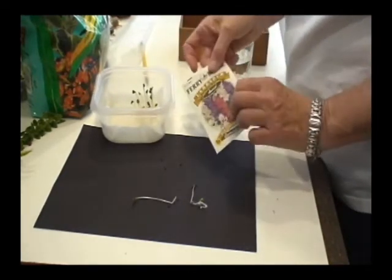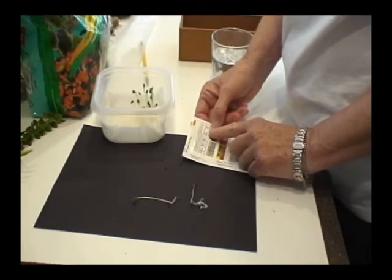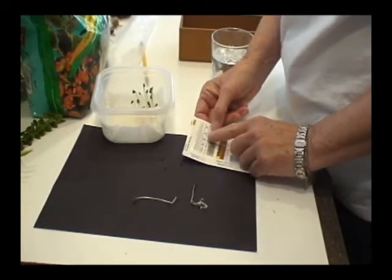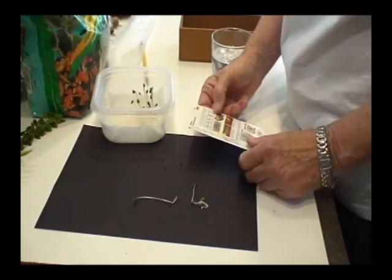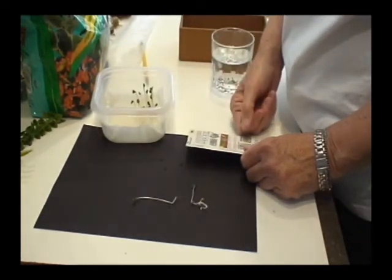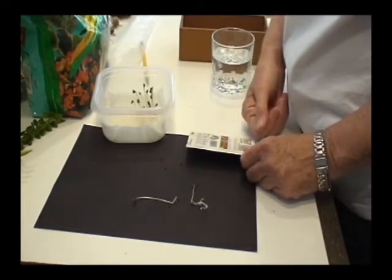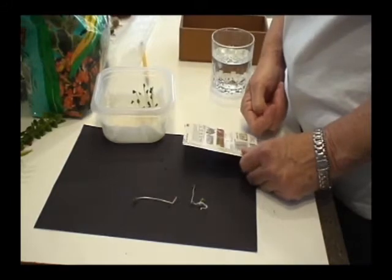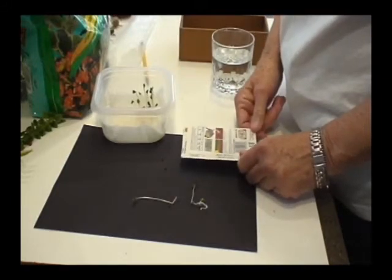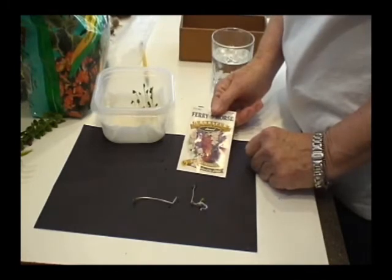On the back of all seed packets, it will give you a germination rate. Germination means the ability to at least put the root out and possibly get the leaves up. So if it says 95%, most of the seeds in your packet are going to grow into a plant. If it says 50%, then you know you're only going to get about half the seeds.